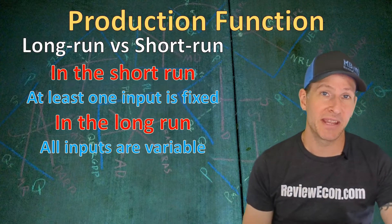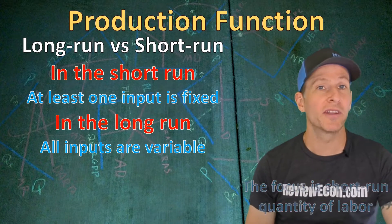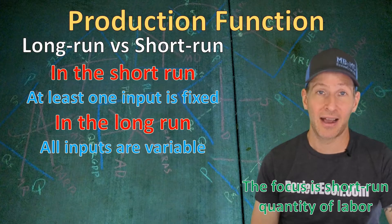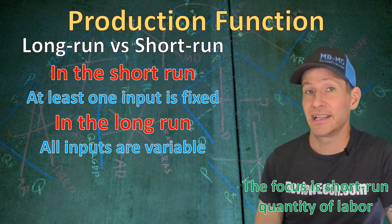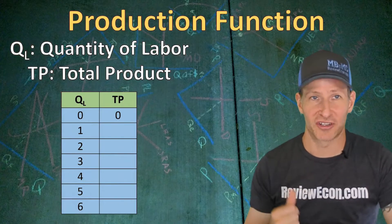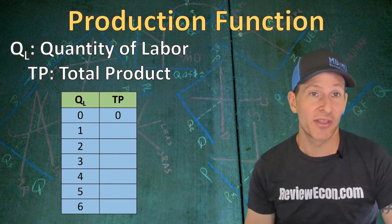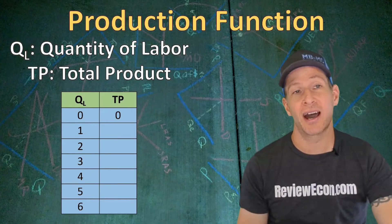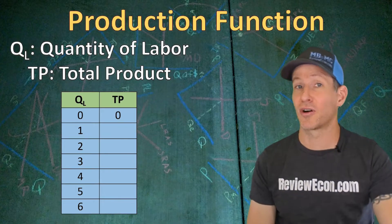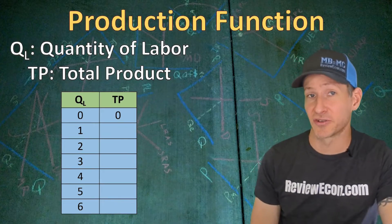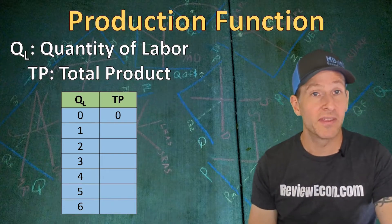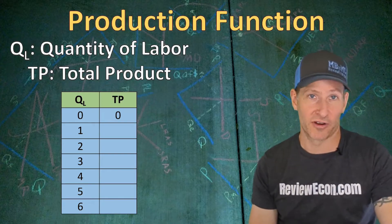For the purposes of the AP microeconomics exam, we are going to focus on changes in the quantity of labor and how those changes impact firms' output. Here we have a production function with different quantities of labor that a firm could hire, and we are looking at the total product — also called total physical product — which is the total quantity of output that can be produced with the given number of workers hired.